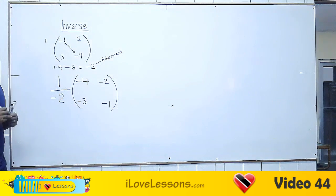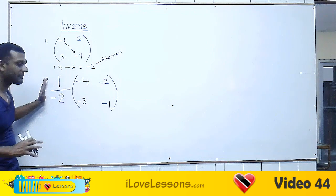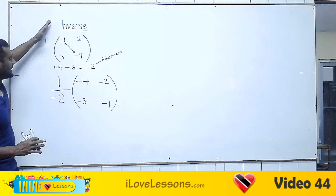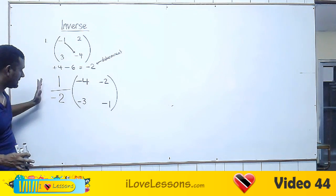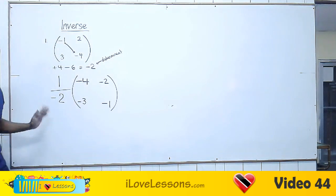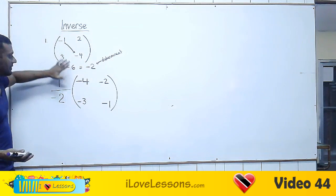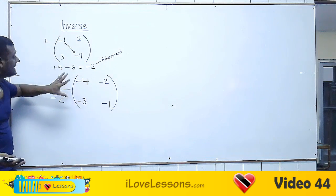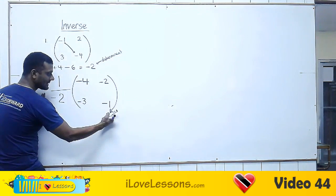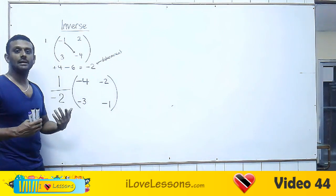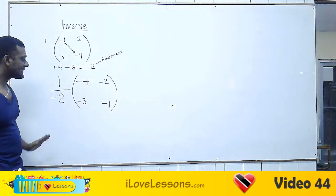And this is your inverse — your final answer. Now, if you want to be fancy, you can multiply everyone inside by minus a half. But from my experience, in a lot of examinations, if you leave your answer like this — without multiplying everyone inside by minus a half, and leave it with a fraction outside — you will get full marks. Usually when you find the inverse, you'll need to take it and do something else with it, and it's easier to work with if you leave it like this. My advice is: leave it just like this.